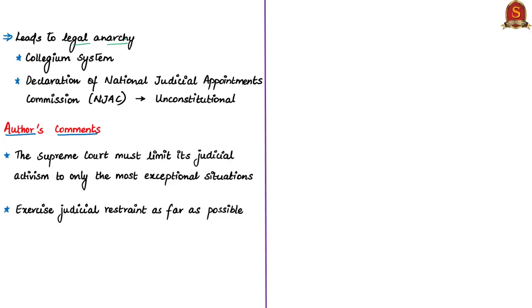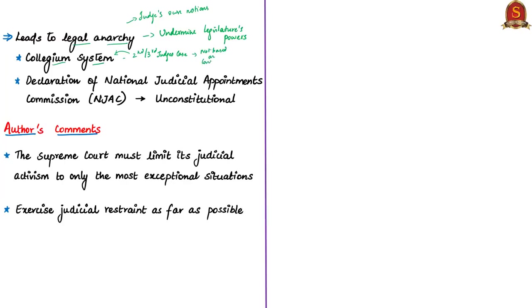Legal anarchy refers to the judiciary's activities that undermine the legislature's powers, such that there is no hierarchy followed in exercising those powers, and judges pass judgments according to their own notions. This would seriously undermine the legislature's powers. The authors have explained this legal anarchy with two judgments. First is the collegium system — the authors note that the second judge's case of 1993 and the third judge's case of 1998, which created the collegium system of appointment of judges, were not based on any provision in the Constitution. Article 124, which prescribes how Supreme Court judges are to be appointed, does not mention any collegium system. The authors call this legal anarchy since the founding fathers of the Constitution never envisaged the collegium system.